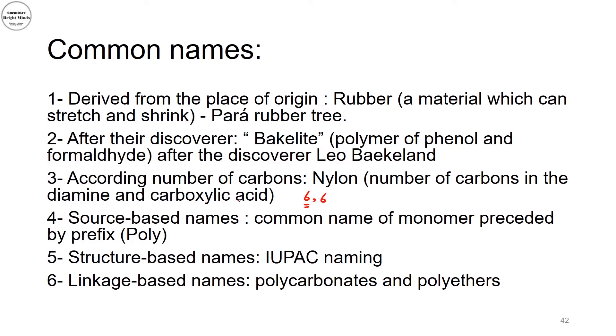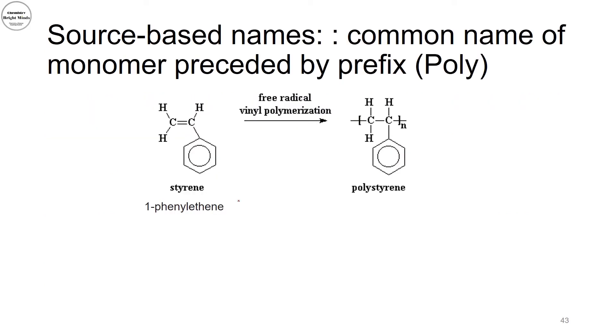We also can name our polymers from the source-based name. Usually it is similar to the common name of the monomer preceded by the prefix poly. Or the structure-based name according to IUPAC, linkage-based names similar to that, like as in polycarbonates and polyethers.